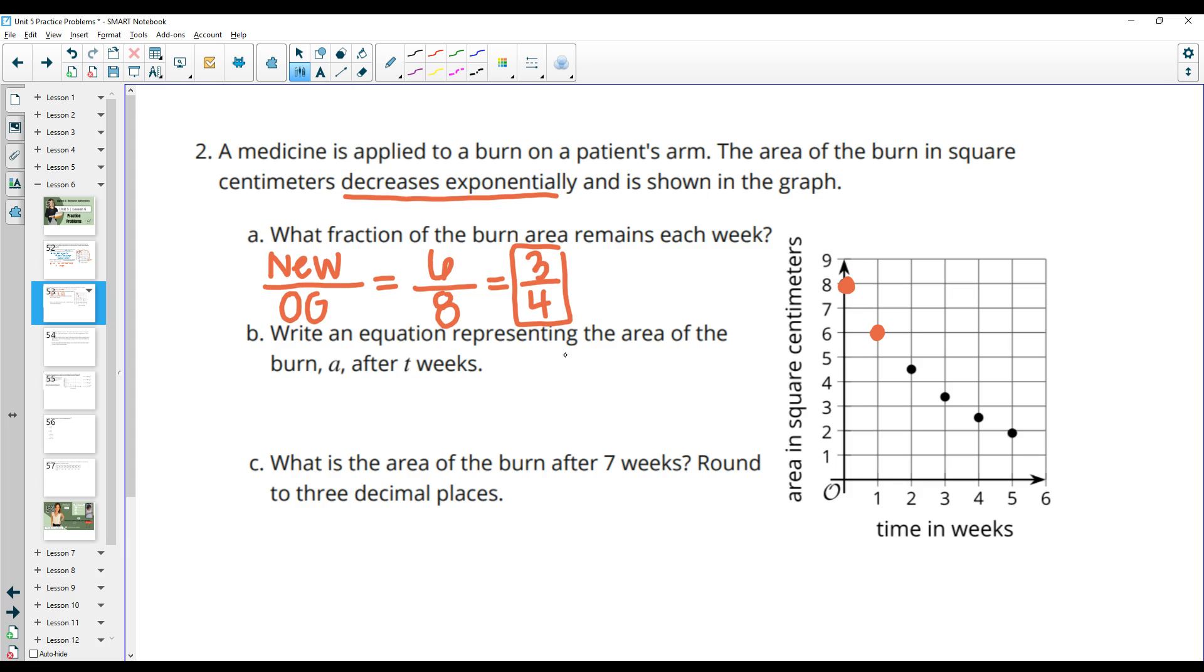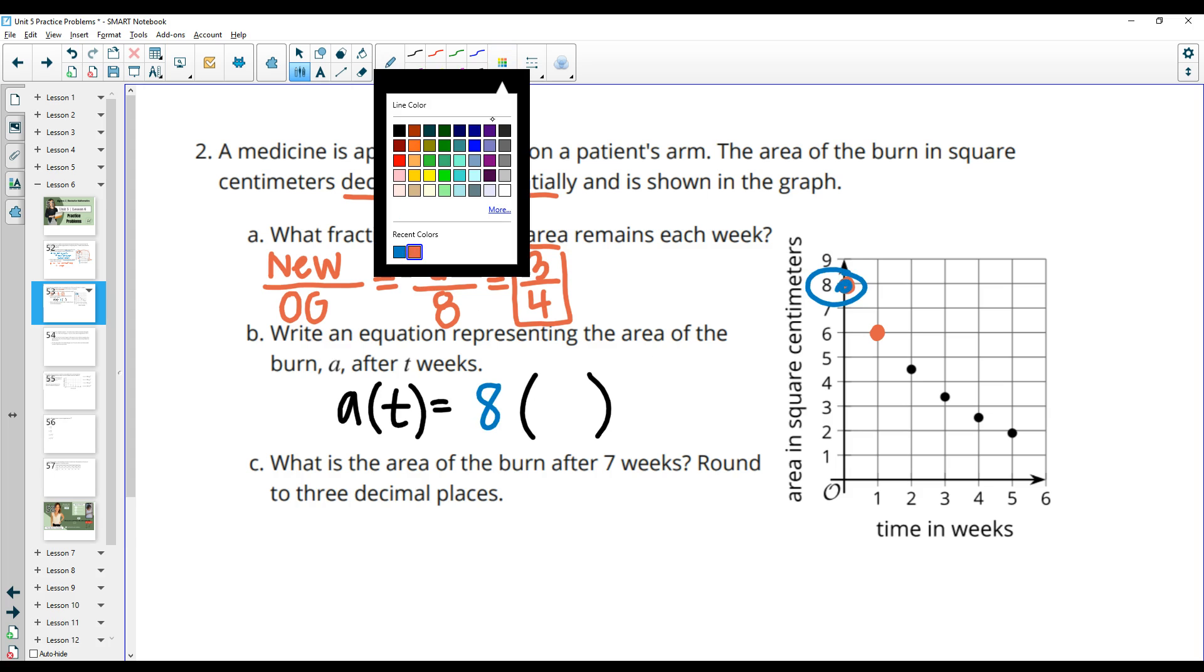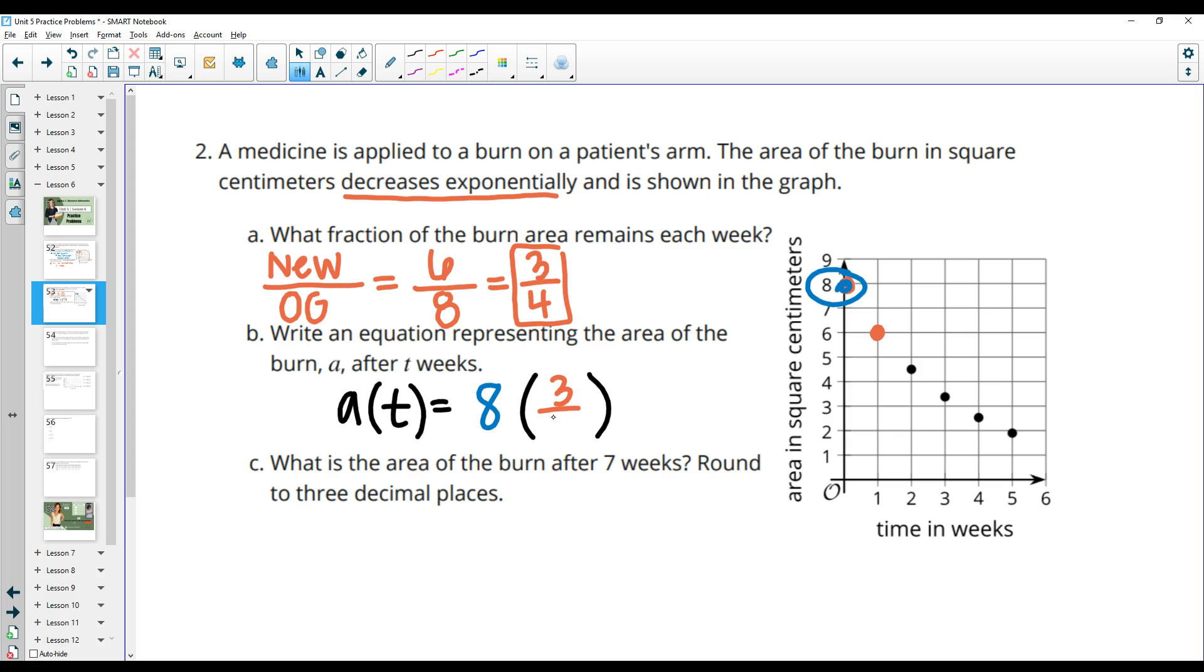Then it says write an equation that represents the area of the burn a after t weeks. So we have a of t is our function. And we're trying to write this. Remember that we'll take the initial value. And so our initial value here is eight. So we'll take the initial value and we'll multiply that by the fraction of burn that remains. And then our variable will be the exponent. So we have eight times three-fourths to the t.